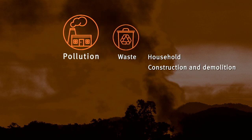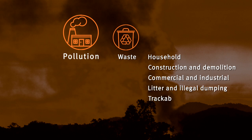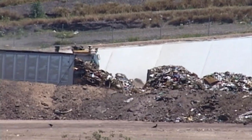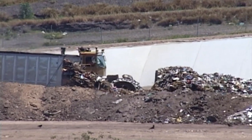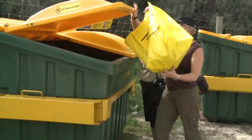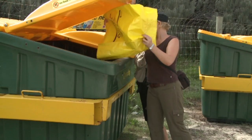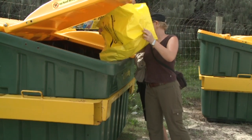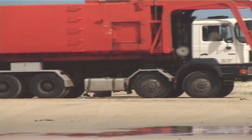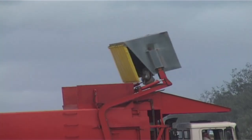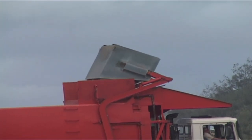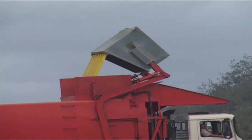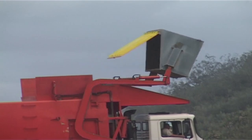The five waste types are: household, construction and demolition, commercial and industrial, litter and illegal dumping, and trackable waste. The volume of waste landfilled and recovered or recycled is further analysed. The economic, environmental and social costs associated with waste generation and disposal are also discussed here as a sub-theme.